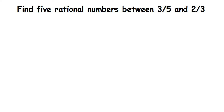Here's a question on rational numbers: find five rational numbers between 3/5 and 2/3. This type of question is really important — they may just change the numbers and ask you to find rational numbers between two given rational numbers. This method is really simple and applicable for all such questions.